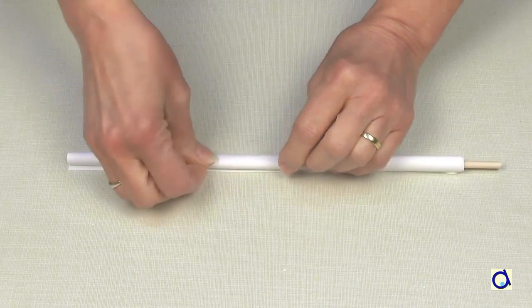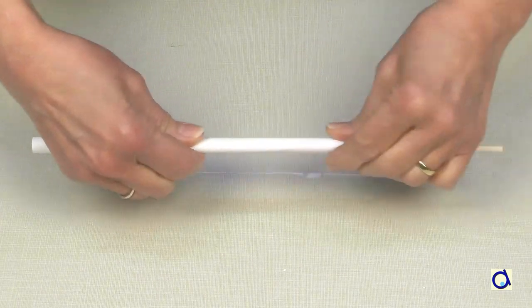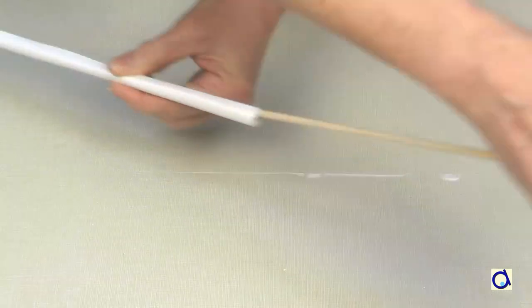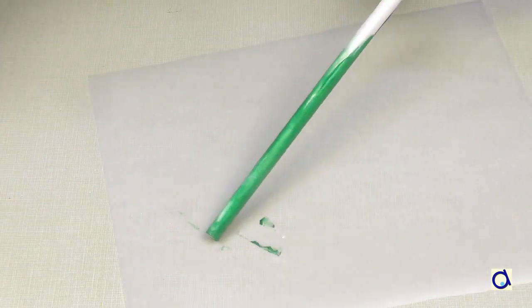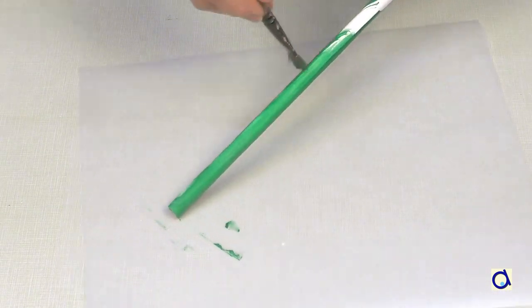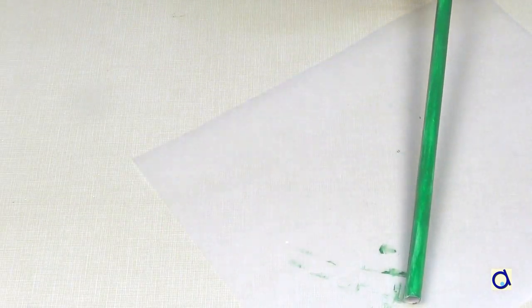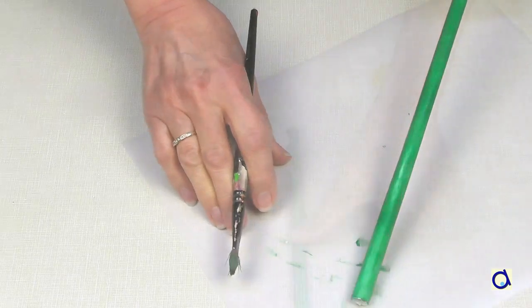When you have formed a thin roll, glue all along the edge with white glue and let the glue dry. Paint the paper stem green and let the paint dry. Now, the stem of the flower is ready.